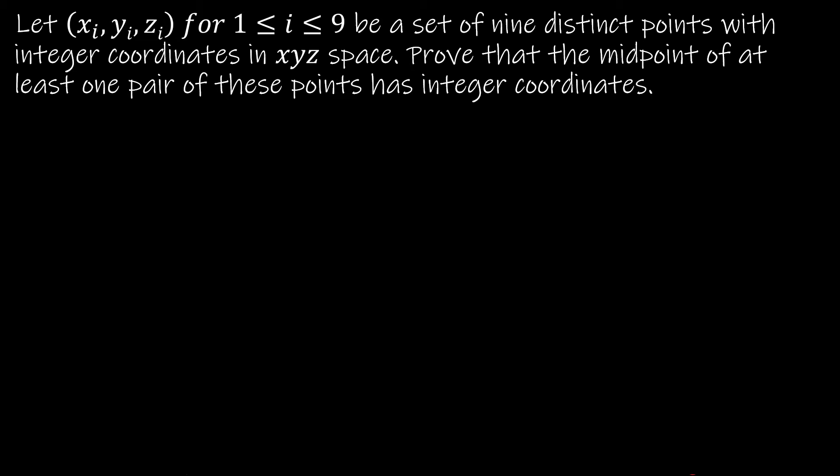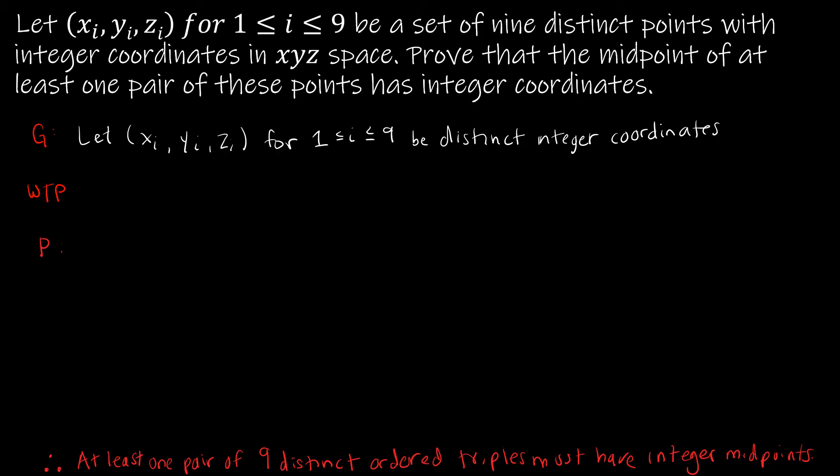As we're working with the proof, it's a really good idea to structure your proof in a way where you're going to have a given, a what to prove, and a proof. I encourage my students to do that just because it really helps us to know what is the information given to us? What's the premise? What are we trying to start with? Then the what to prove says exactly how we're going to prove it based on our given and then our actual proof itself. And then the very last part will be our conclusion, which really should match the what to prove. So in this case, I'm trying to prove that the midpoint of at least one pair of these nine points has integer coordinates. So for our given, we talked about the fact that it's really just that first sentence. We have an ordered triple and we have actually nine of them. So for 1 ≤ i ≤ 9, and they are distinct integer coordinates.